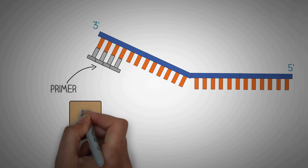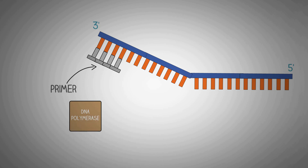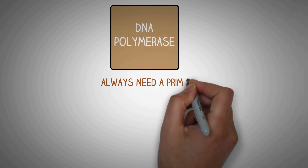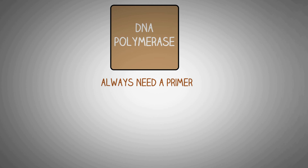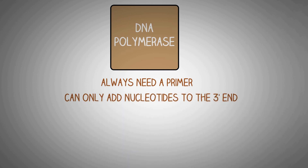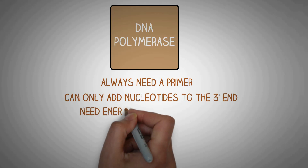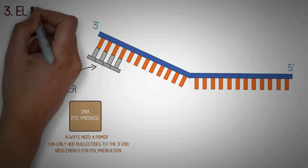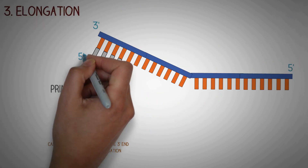Now it is the turn of the enzyme DNA polymerase to do its job. Important points about DNA polymerase are: it always requires a primer to work with, which is a short sequence of nucleotides; it cannot start synthesizing new DNA from scratch; it can only add new nucleotides at the three prime end of the DNA; it can only synthesize a new strand in one direction; and it requires energy for polymerization reactions, which it gets from the nucleotides themselves.